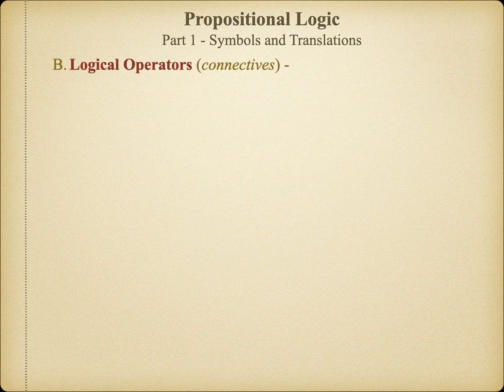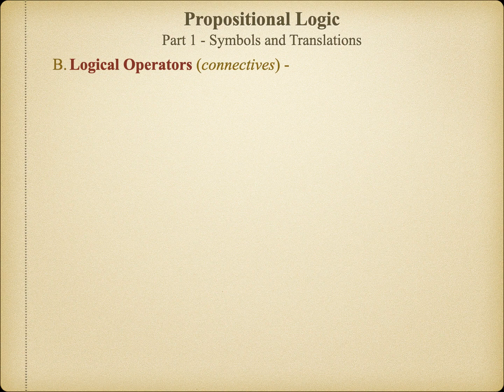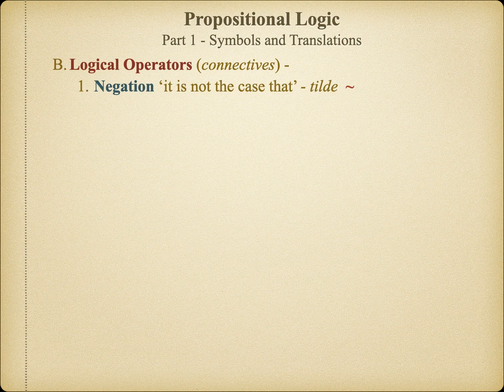Now that we've learned how to symbolize propositions, we're ready to learn how to symbolize the logical operators that form the heart of propositional logic. There are just five logical operators we have to learn, and each has a unique symbol representing the logical operation performed on simple propositions. First, there's negation, which is symbolized using the tilde. This symbol represents the negation of any simple proposition — it's like adding the phrase 'it's not the case that' in front of a statement. If we wanted to conjoin any two simple statements, we would use conjunction, which is symbolized by the dot. This logical operator asserts that both statements are true.